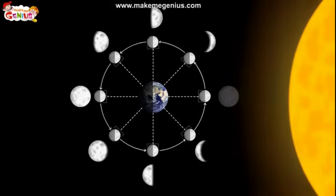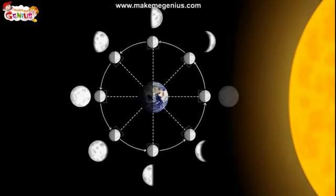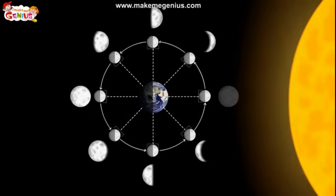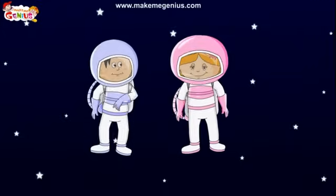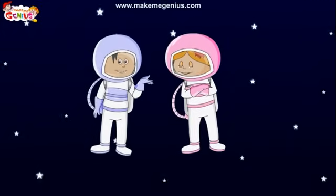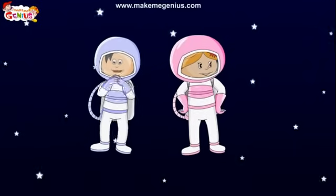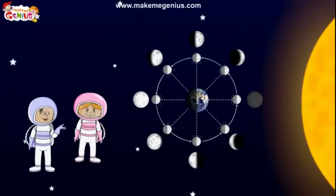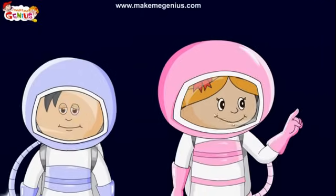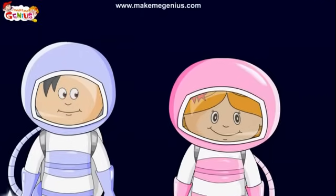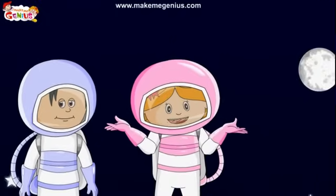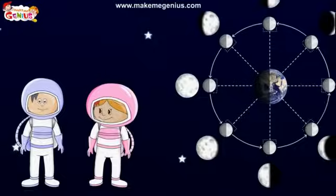The phases of the moon depend on the moon's position in relation to the earth and the sun. As the moon makes its way around the earth, we see the bright parts of the moon's surface at different angles. These are called phases of the moon. The phases are named after how much of the moon we can see and whether the amount visible is increasing or decreasing each day.